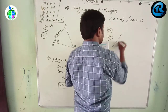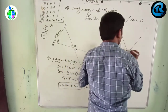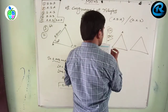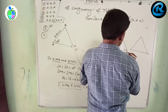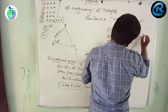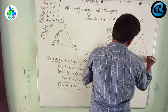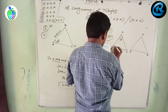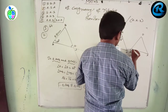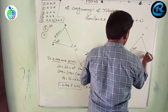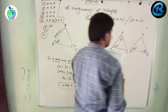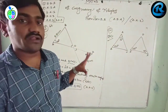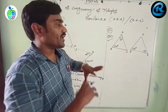For the fourth question, two triangles ABC and CDF are given with measurements of 70 degrees and 50 degree angles. We need to check if these triangles are congruent or not. We cannot say they are congruent.